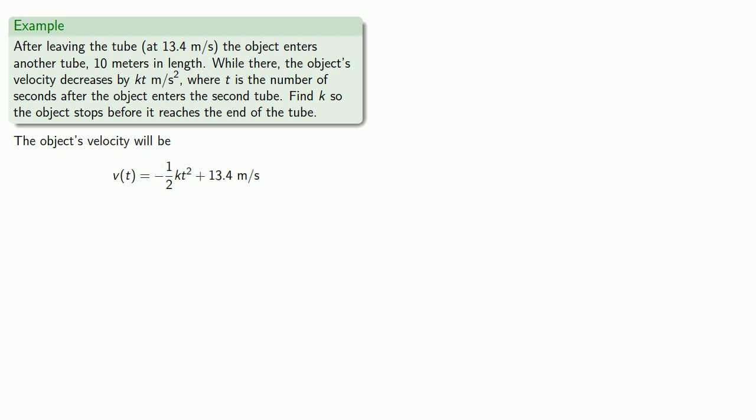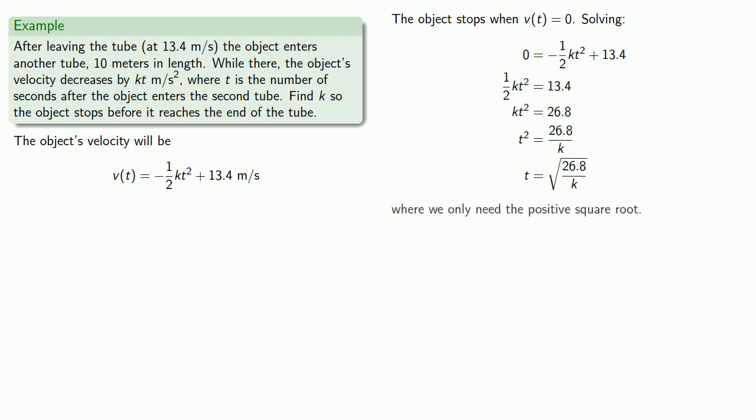The object stops when its velocity is 0, so we'll set up our equation and solve for t. Since t has to be positive, we only need the positive square root.